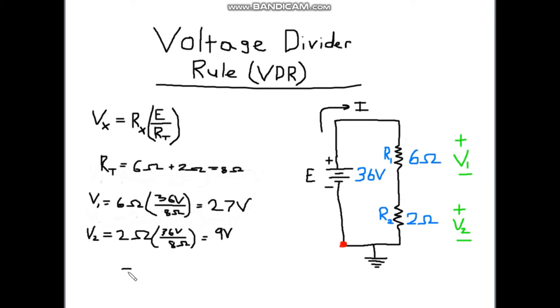So we will get 36 volts minus 27 volts minus 9 volts equals zero. And that is true. It does equal zero, so Kirchhoff's voltage law holds true.